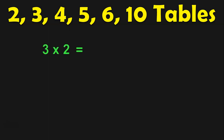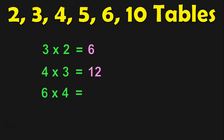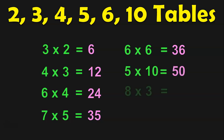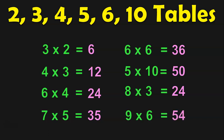3 into 2 is equal to 6. 4 3's are 12. 6 4's are 24. 7 5's are 35. 6 6's are 36. 5 10's are 50. 8 3's are 24. 9 6's are 54. It is very essential for the children to do these tables by heart because all the sums and multiplications that they do in Class 2 will be based on these tables.